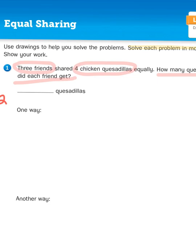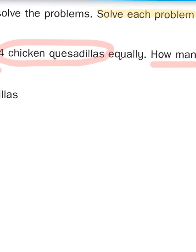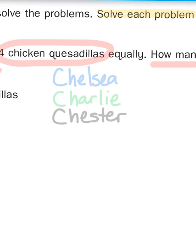So first of all, before we get too far into this problem, let's give each of these friends a name so that it's easy for us to keep track of. So let's say one of the friends is named Chelsea, another friend's name is Charlie, and a third friend is named Chester.